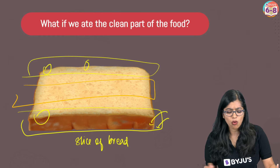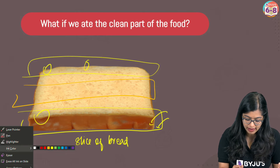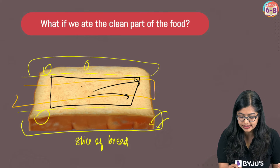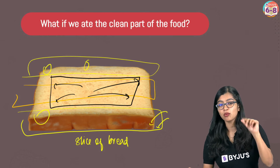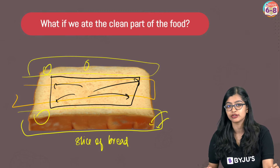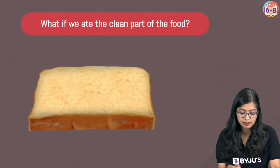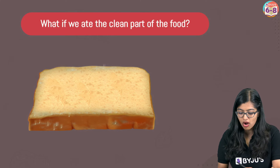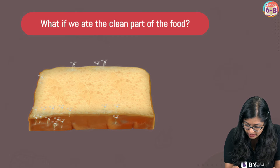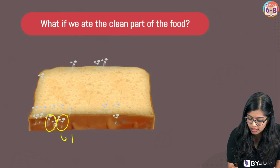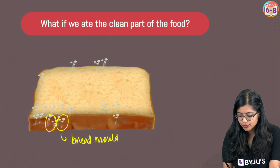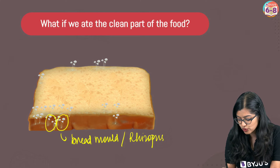So you must be wondering: what if you removed the edges and just cut out and consumed the clean center part? Is it possible? In order to understand this, we look closer at the microbe that is actually spoiling the food. The microbe growing on the bread is what we popularly call bread mold. As you can see on screen, these small structures are the bread mold, and scientifically we call it Rhizopus.